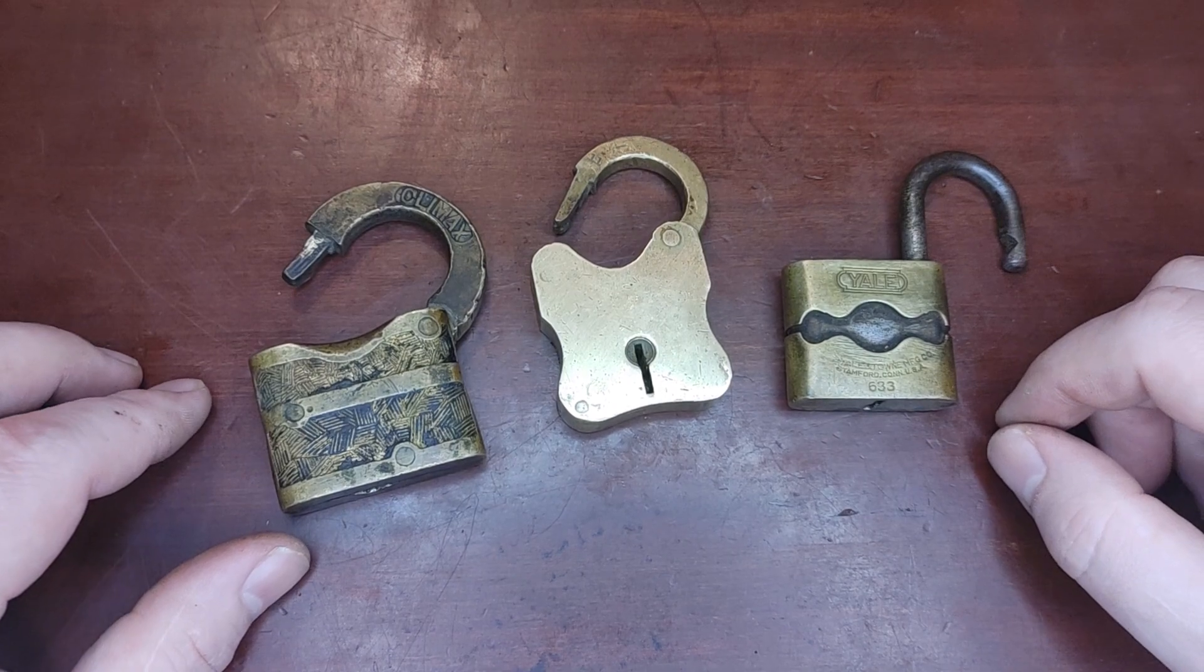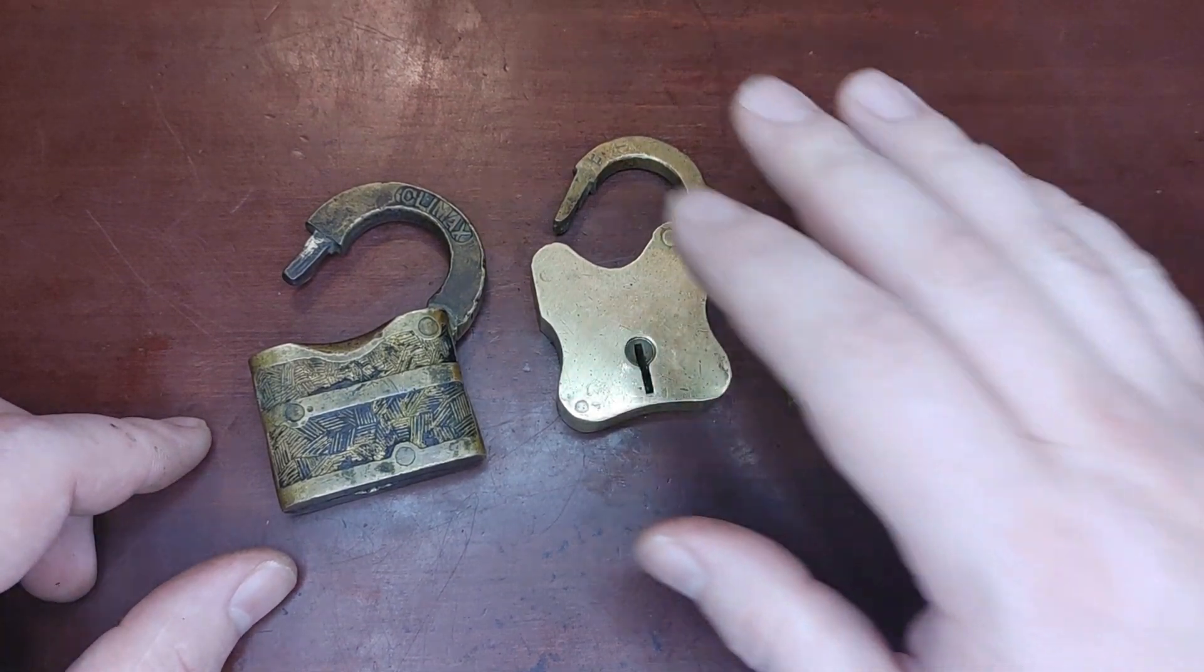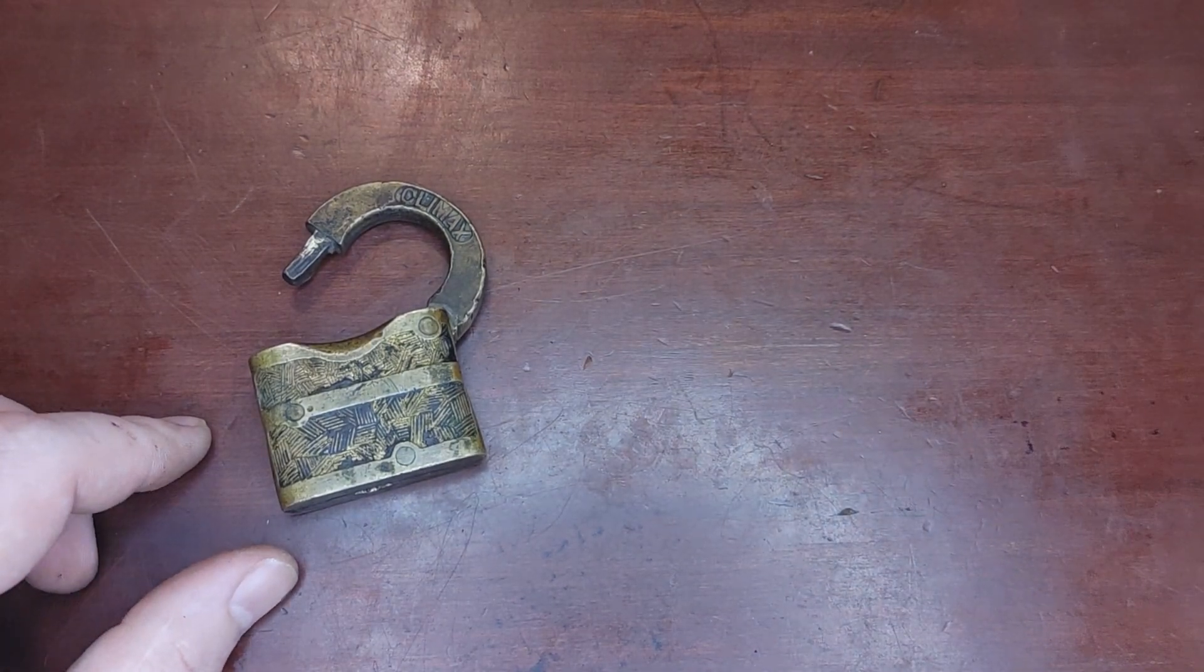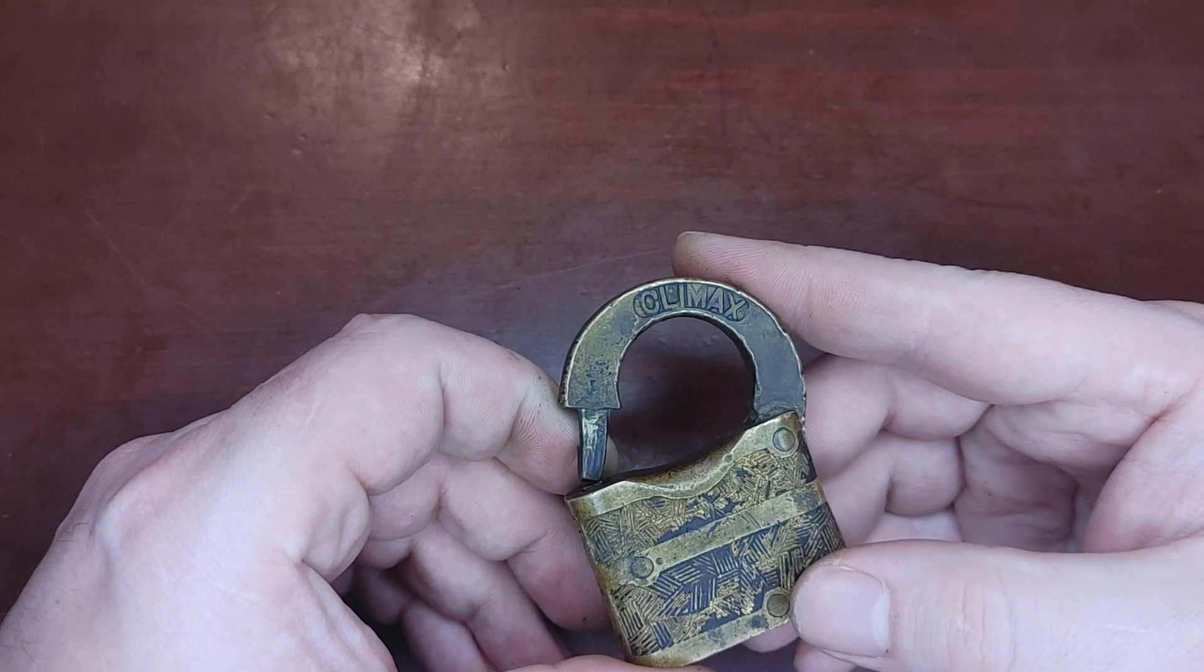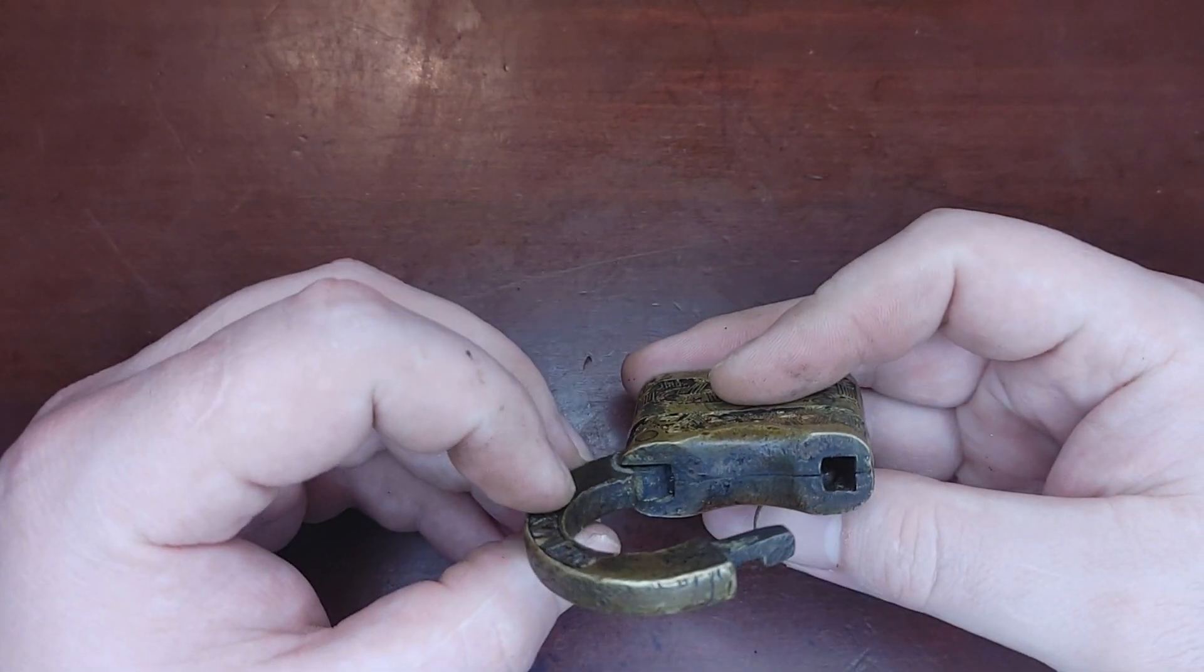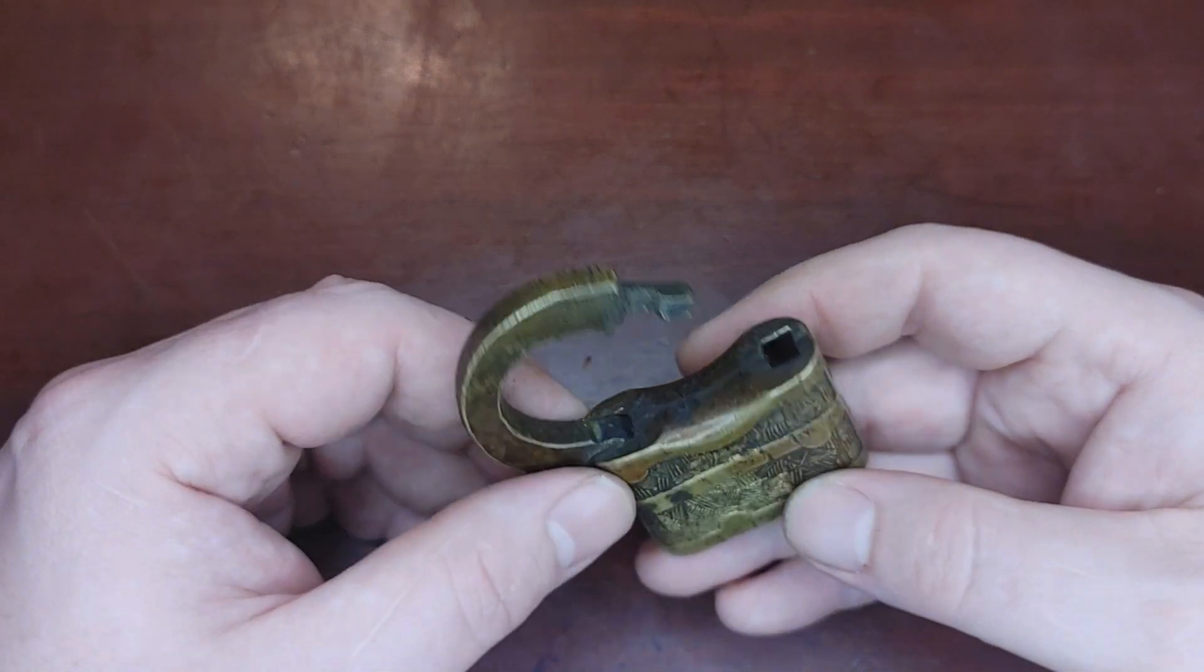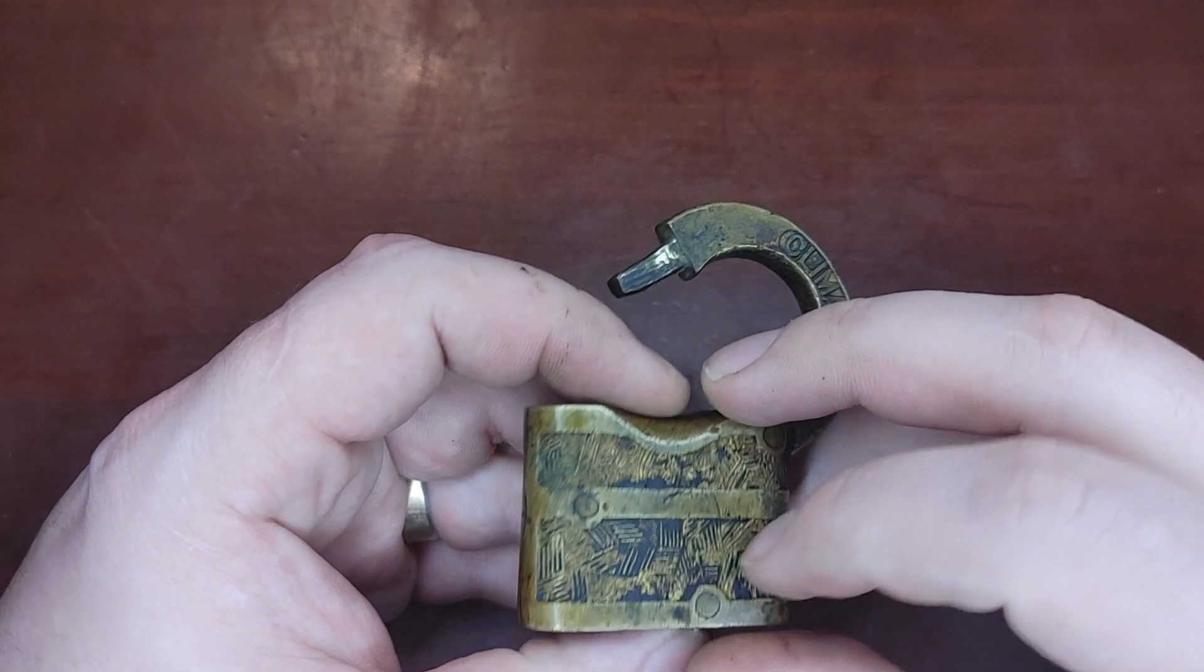So I'm going to go ahead and go through them and start picking them. We'll start with this guy over here. It says Climax is the brand on the shackle there. It's this big thick brass shackle, I think that's brass. It's got this interesting pattern on the front and the side here.